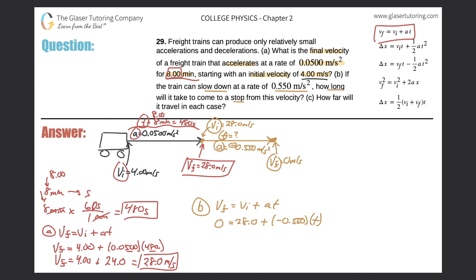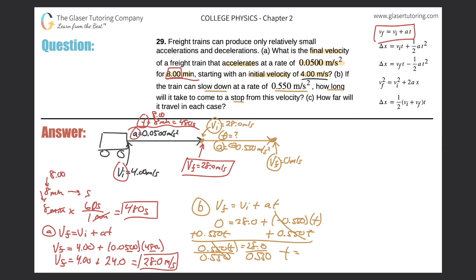This is really a subtracted term after distributing the negative. I'll add the term 0.550t to the other side. So 0.550t equals 28.0. Now divide out the 0.550. My time becomes — do 28 divided by 0.55 — and the value comes out to about 50.9 seconds with three significant figures.